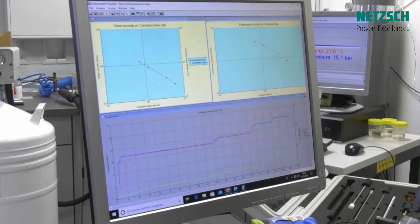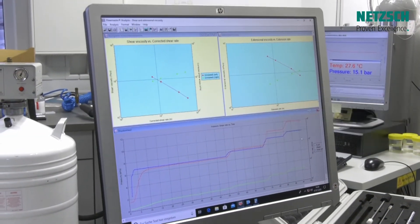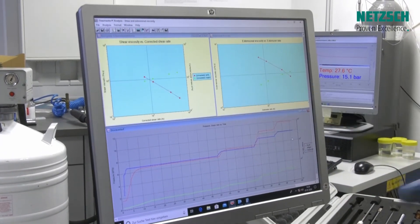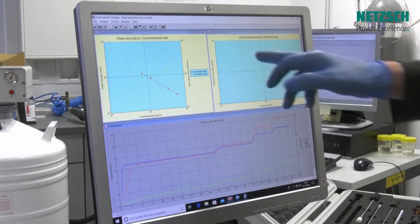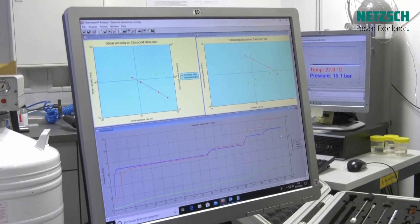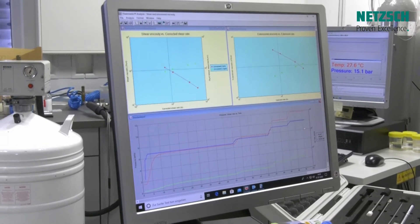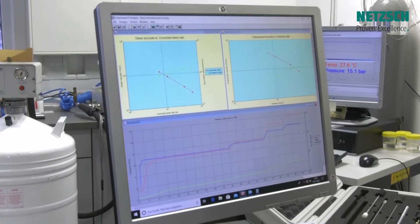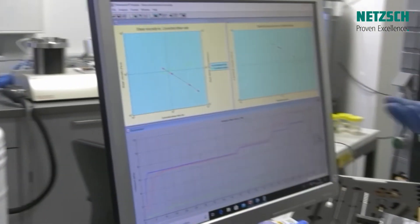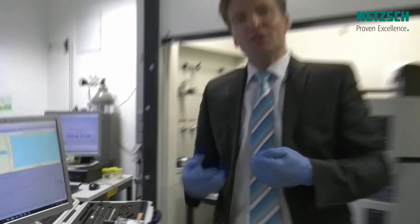And you can also calculate the extensional viscosity, which gives you an impression on the resistance when the material undergoes a change in cross section. So therefore this is a nice tool to simulate what is happening in real processes like extrusion, injection molding, or even spraying.